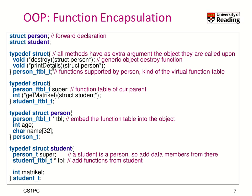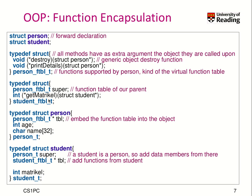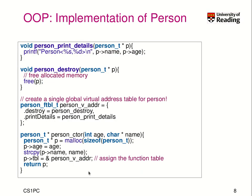We add print_details to the function table. A student contains all the methods of a person, but additionally contains the get_matricle method. So far our structures encapsulated only data members; now we simply add the person function table and a student function table into the structures of Person and Student respectively. That's a simple way of doing this encapsulation.